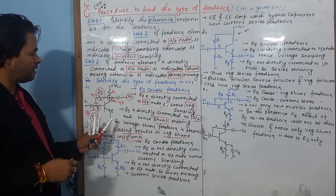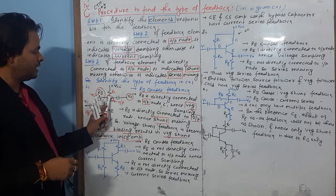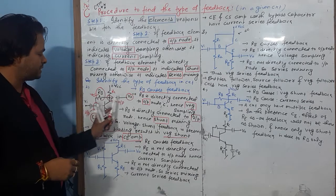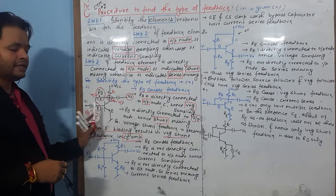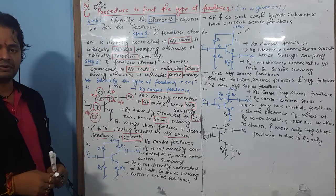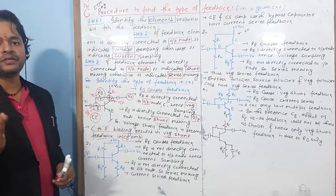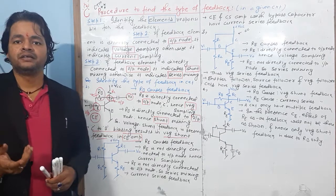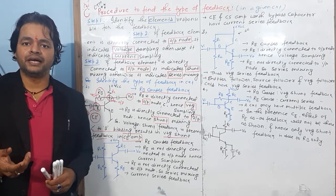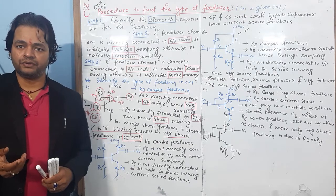Otherwise, you cannot determine the input and output nodes. First, identify the output node and the input node — to which terminal the output voltage and input voltage are connected. The remaining terminal is the common node.